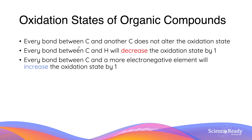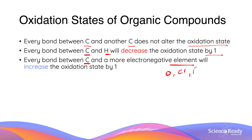In contrast to what you have learned about oxidation and reduction in year 11, oxidation states of organic compounds are calculated very differently. The following rules are applied when determining the oxidation state of a carbon atom: every bond between a carbon and another carbon does not change its oxidation state; every bond between a carbon and a hydrogen will decrease the state by one; and every bond between a carbon and a more electronegative element such as oxygen, chlorine, or bromine will increase the state by one.